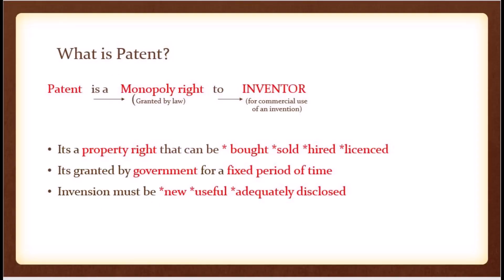What is patent? Patent is a monopoly right granted by law to the inventor for commercial use of an invention. Here, monopoly right means a privilege granted by an authority to a person or entity which excludes all others.